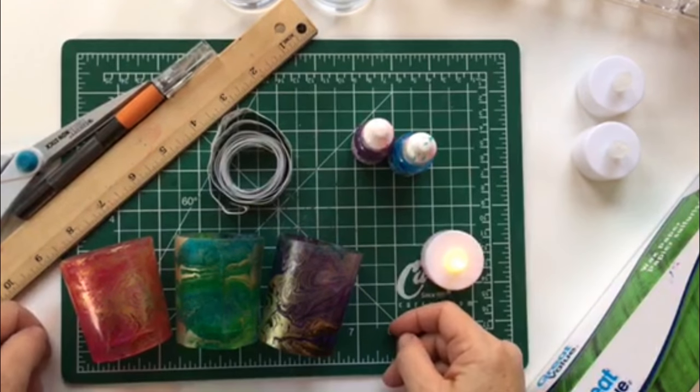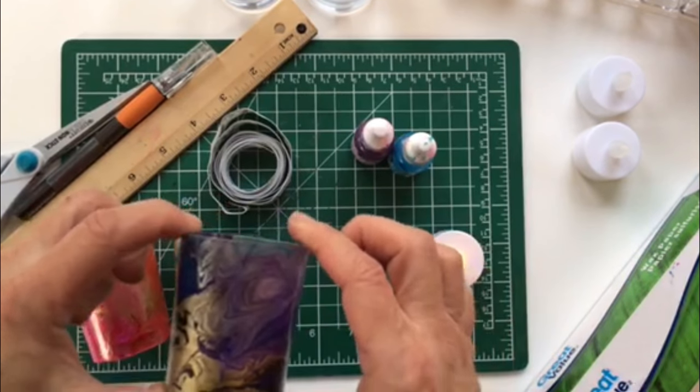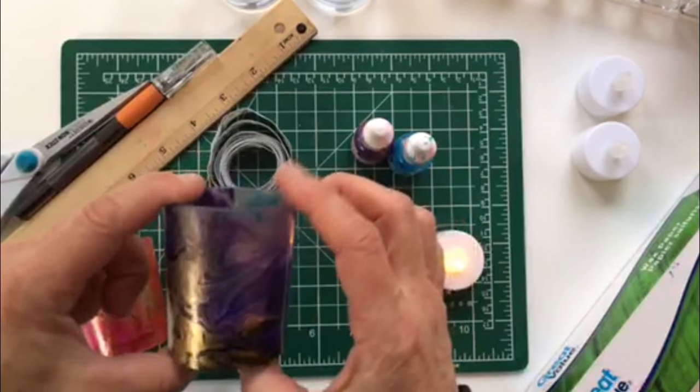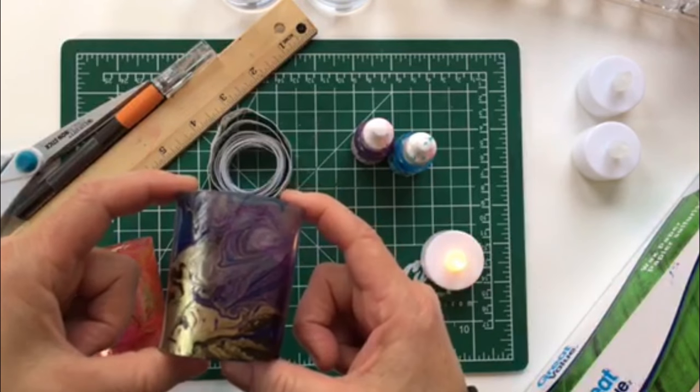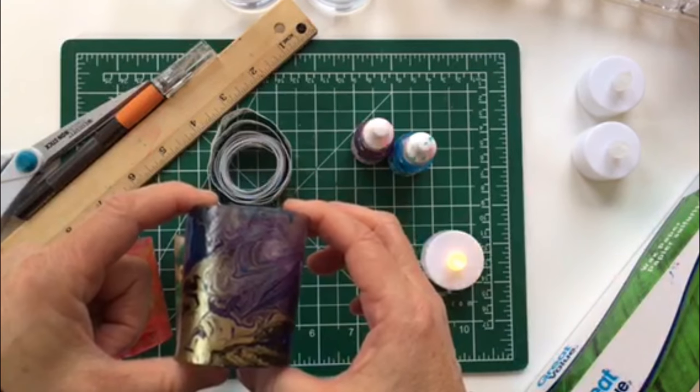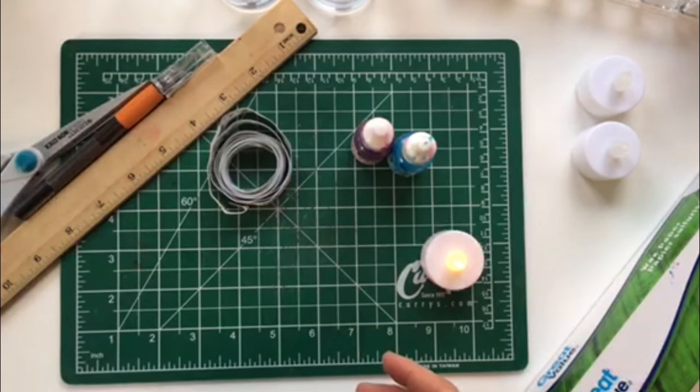Hello everybody and welcome to another episode of Art with Jay Monteith. Today I'm super excited to share with you guys this fun project of alcohol ink and resin wrapped candle holders. These are great little gifts and they're fun to make and put on your dining room table.